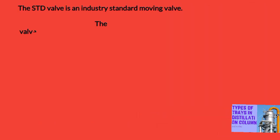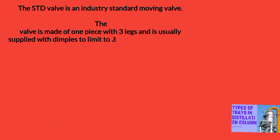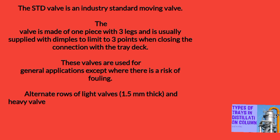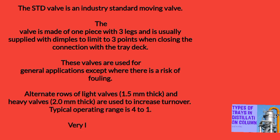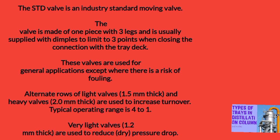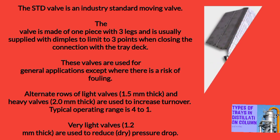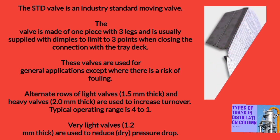The STD valve is an industry standard moving valve. The valve is made of one piece with 3 legs and is usually supplied with dimples to limit to 3 points when closing the connection with the tray deck. These valves are used for general applications except where there is a risk of fouling. Alternate rows of light valves 1.5 mm thick and heavy valves 2.0 mm thick are used to increase turnover. Typical operating range is 4 to 1. Very light valves 1.2 mm thick are used to reduce dry pressure drop.